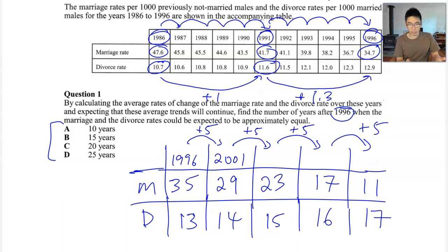So what's the question asking us to do? We want to know at what point are the marriage and the divorce rates expected to be approximately equal? And I hope you can see that that happens around here. So how many years have actually passed? Five, 10, 15 years.